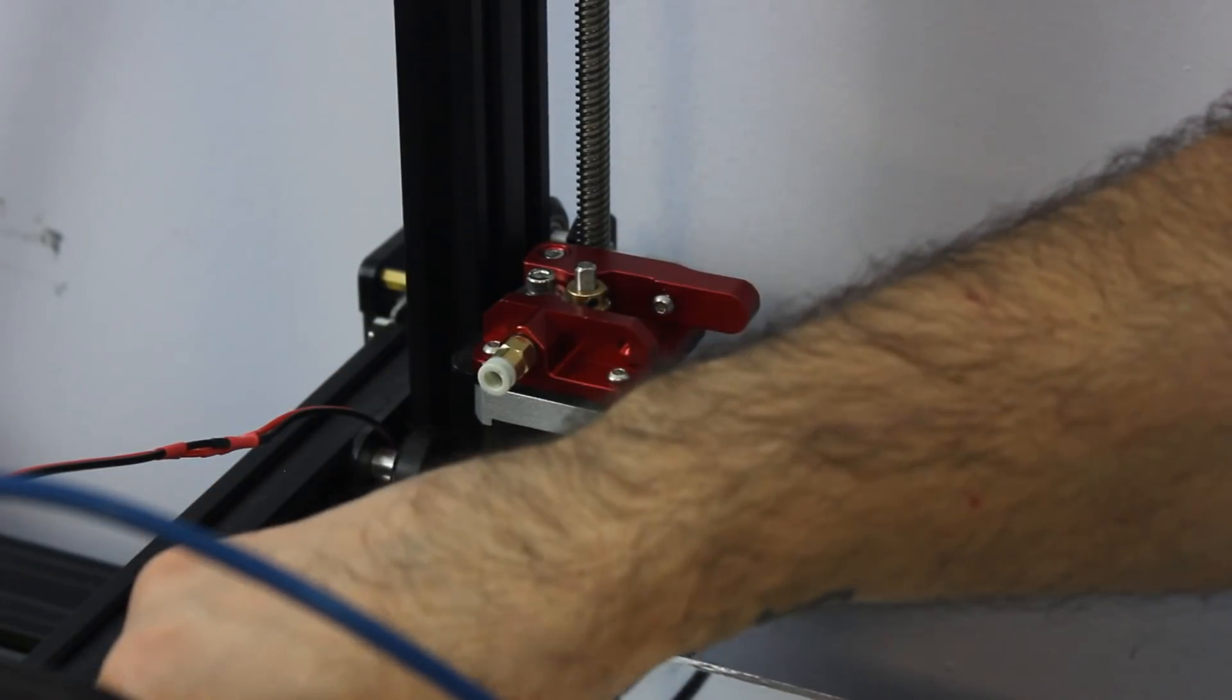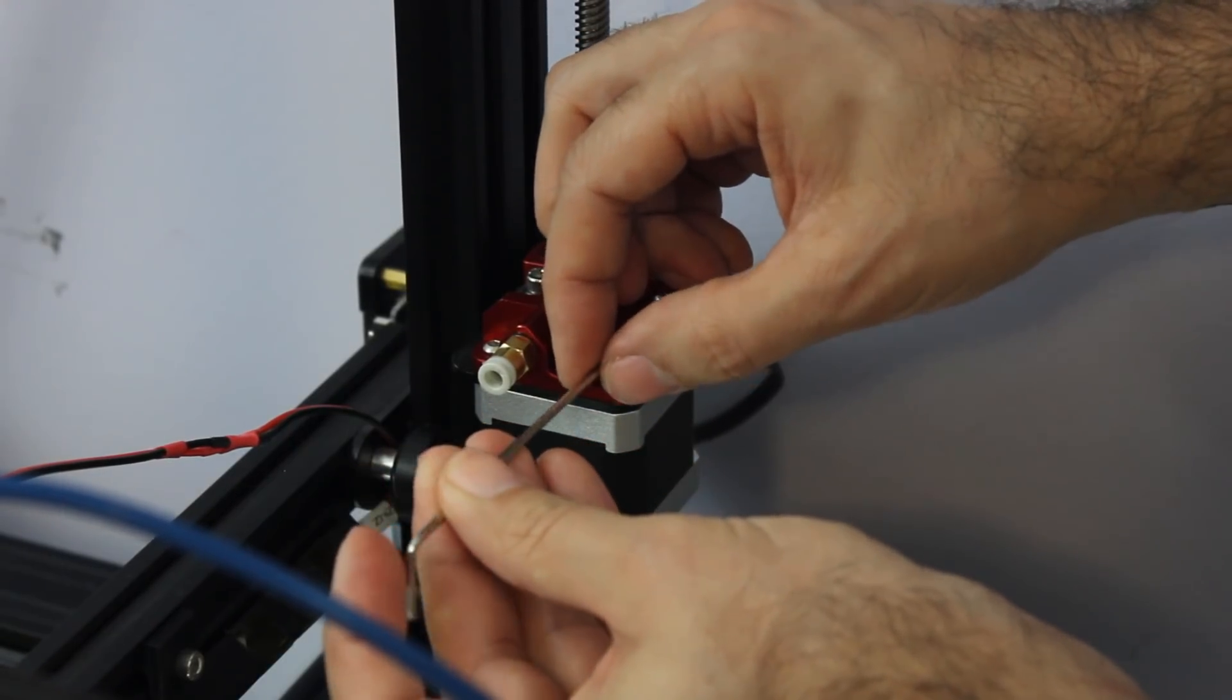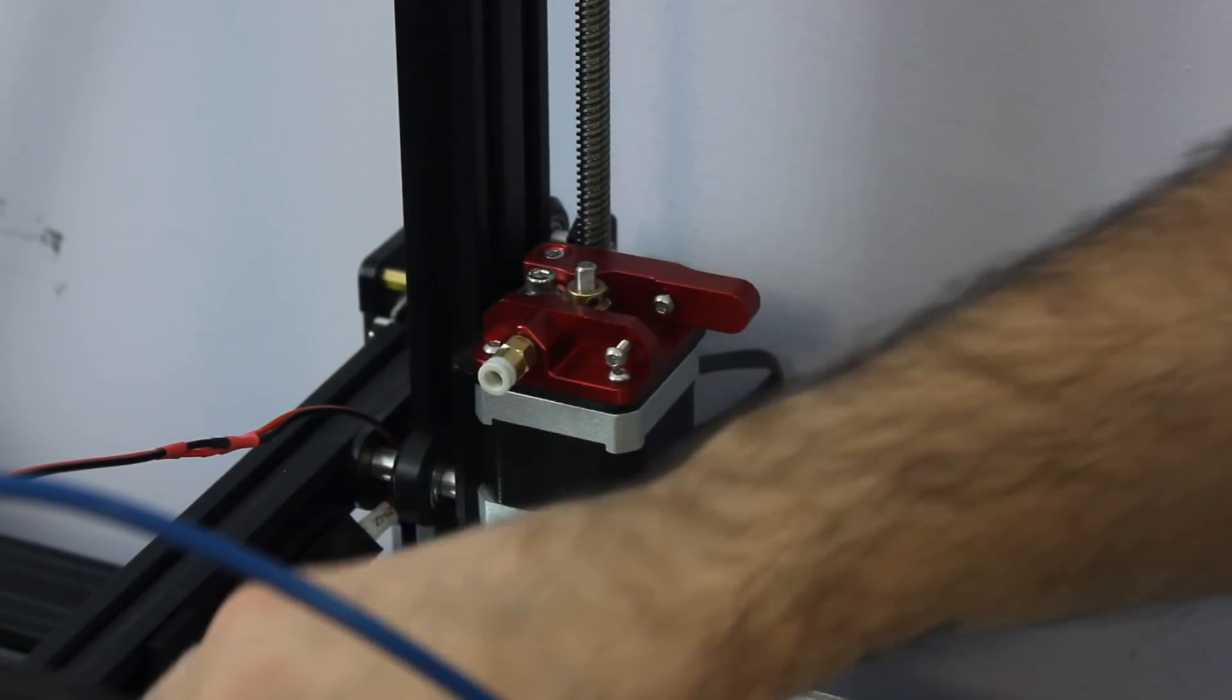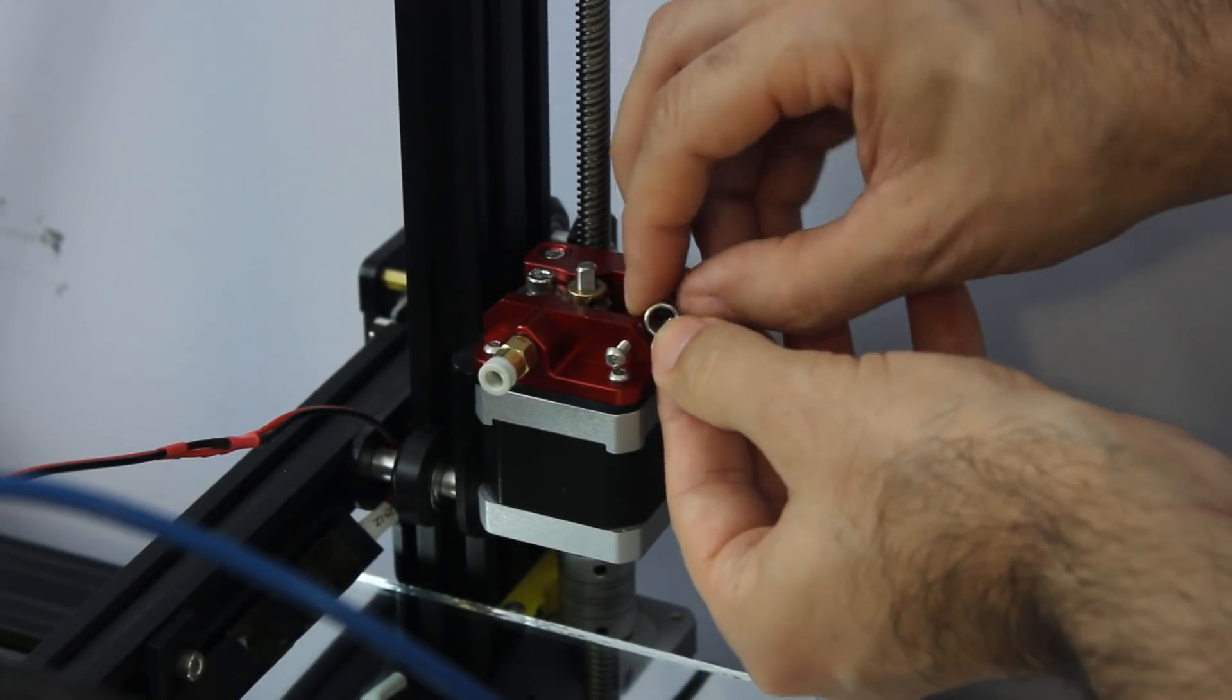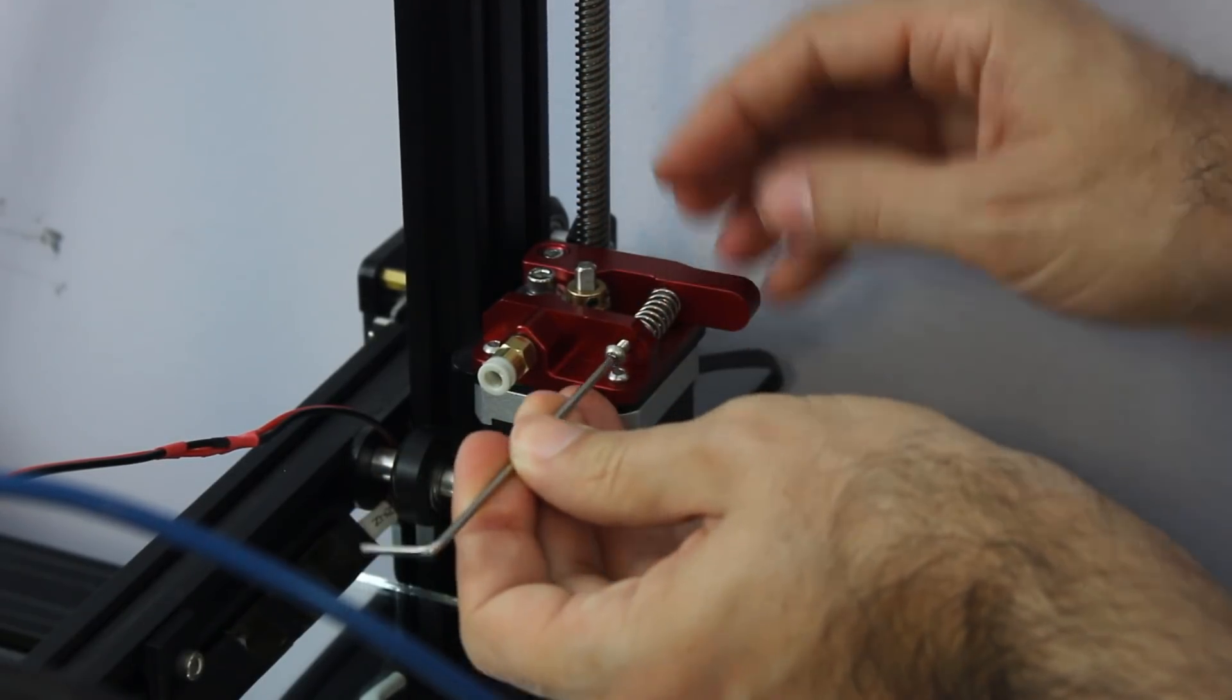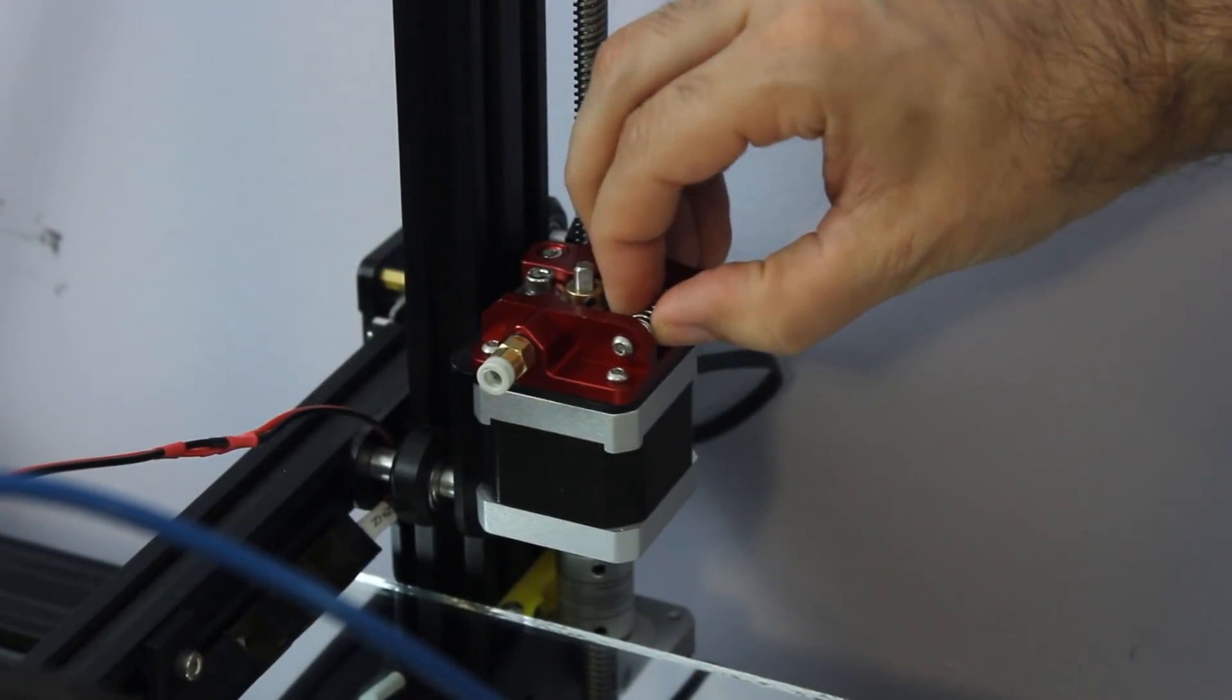And so next is going to be this little screw right here. And I just bring this in until it's about flush with this so that it makes it a little bit easier to slip this spring in place. So you just kind of get through that, get it centered up a little bit, and then go ahead and put that in the rest of the way. And that keeps the spring captured.